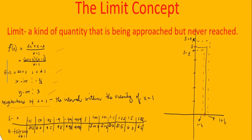If you look at the graph, there are numbers closer to 1 before 1 and after 1. Before 1 is 1 minus delta, and after 1 is 1 plus delta. Similarly for y, we have the neighborhood of 5: before 5 is 5 minus epsilon, and after 5 is 5 plus epsilon. Epsilon is just an arbitrary constant.